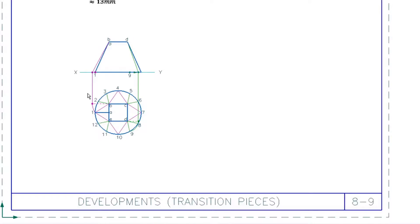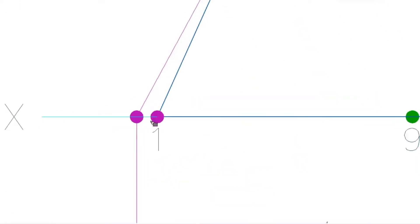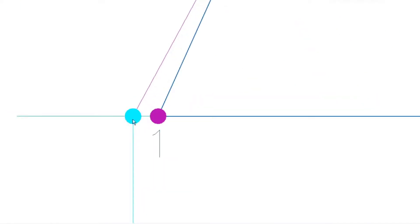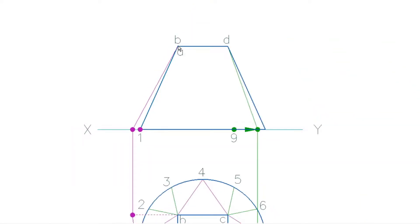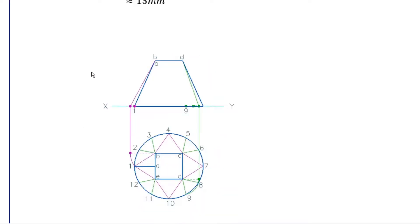For the purple true length, I've decided to go with B1 — again you could have taken any one. I took B1, swung it out in line with B, took it straight up and marked it on the base. Point 1 has moved from here to here while B stayed exactly where it was. Connect it, and there's the true length for the purple fold lines.